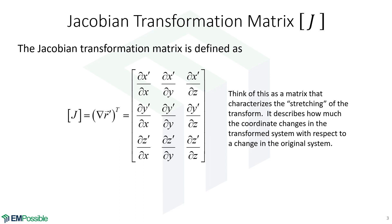We can think of the elements of this Jacobian as quantifying the stretching. For example, DX prime with respect to DX means: if we move left and right in our original coordinate system, how far left and right in our transform system does that take us? And the partial derivative of X prime with respect to Y means: if we're wiggling a little bit in the Y direction, how much left and right does that take us in our transform system? Similarly, the derivative of Z prime with respect to Y asks: if we wiggle a little bit in Y in our original coordinate system, how much does that take us in and out of the screen in the transform coordinate system?